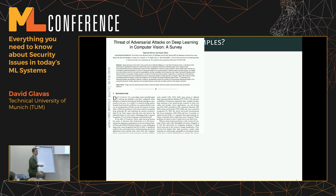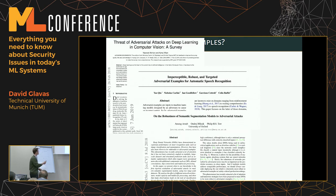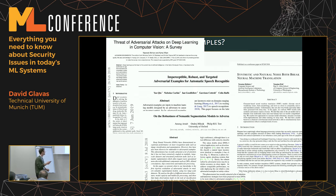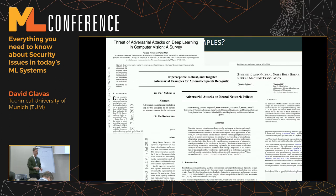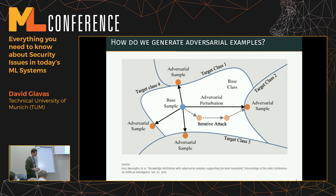Why is this relevant if you don't work with images? Most adversarial example research has been done in computer vision, but there's also work attacking speech recognition systems, segmentation models, neural machine translation, and reinforcement learning. Everywhere we use machine learning, these models are susceptible to these kinds of attacks. Images are just a good starting point because they're easy to visualize.